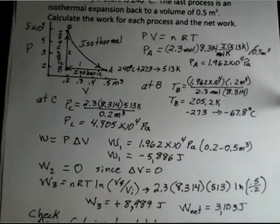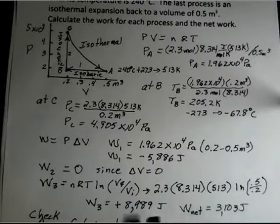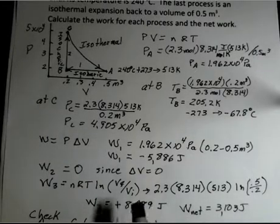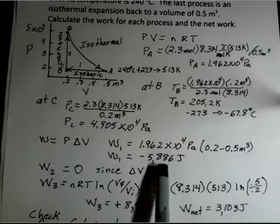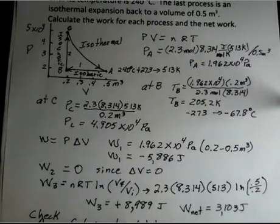And I came up with a positive 8,989 joules. The net work then is 3,103 joules. I have a positive work on the isotherm, 8,989, a negative work on path one, the isobaric compression from point A to point B. And the net of those is a little over 3,000 joules.